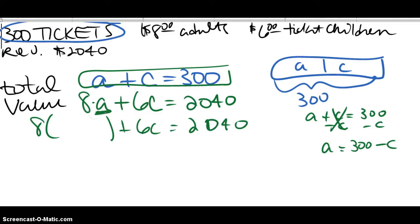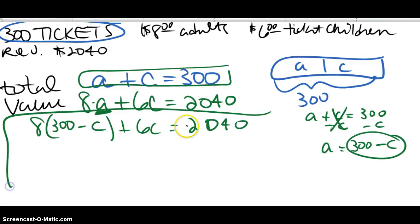So what I'm going to do is leave a parenthesis where my adult spot used to be. So these are how many adults were sold. I don't know, but I know that it's the same as the total minus the ones that were sold for the children. Now notice I have an equation with one variable, so I can solve it.